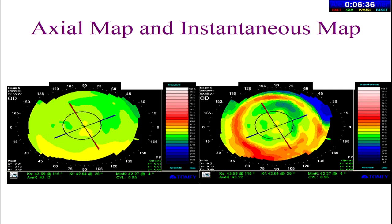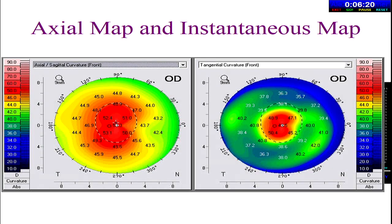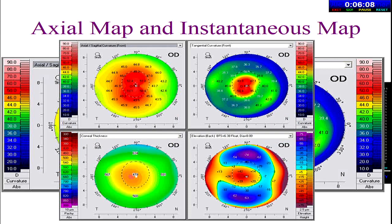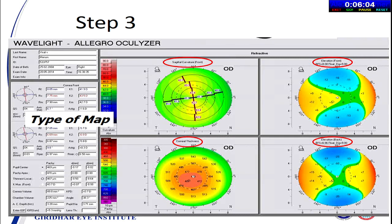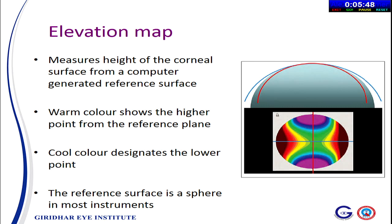After curvature, next comes the elevation map — the most important thing that topography or tomography assesses. It assesses how high a point of interest is from a reference level. You have an elevation map for the anterior surface and for the posterior surface. The computer calculates a best-fit sphere — the sphere which has maximum area of contact with the surface. Points above the sphere are given in redder colors and points below in cooler colors. This is a normal example — green is where the sphere touches the corneal surface.